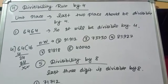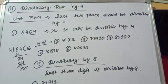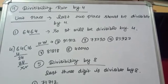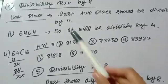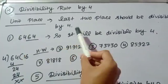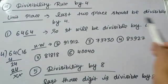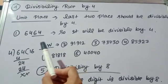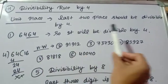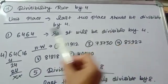Now students, I am going to discuss divisibility rule by 4. For divisibility by 4, the last two places should be divisible by 4. Whatever number you have, the last two digits should be divisible by 4.